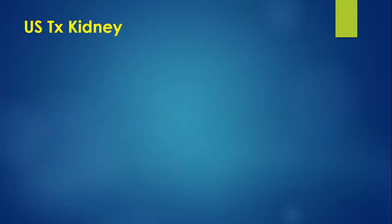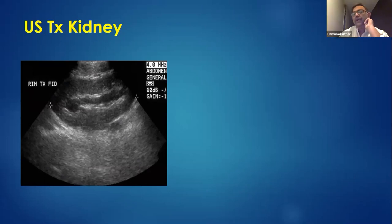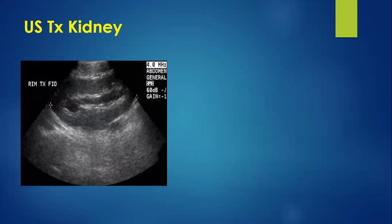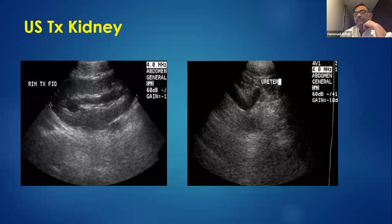Diagnostic tools: gradual creatinine rise, radiological ultrasound showing hydronephrosis — the example ultrasound shows pelvicalyceal dilatation and hydronephrosis with proximal hydroureter. Nuclear scan is less sensitive in transplant as obstruction impairs uptake. If the diagnosis is unclear, an antegrade pyelogram can be considered.